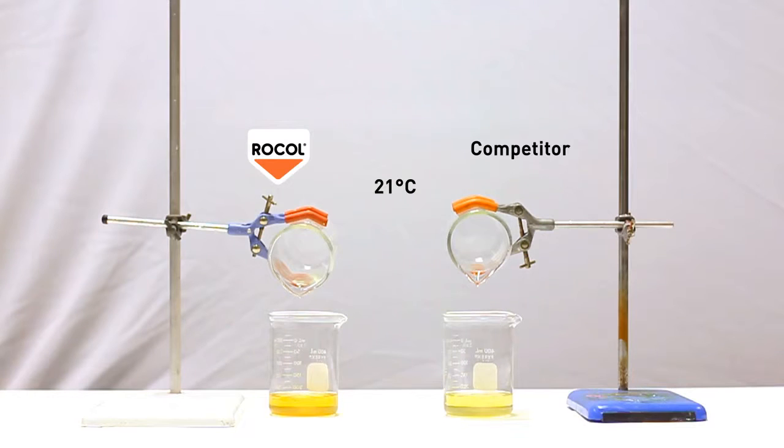To illustrate how important pour point is, let's consider two oils with similar viscosity at room temperature. One is a standard mineral oil lubricant, the other is ROCOL refrigeration compressor oil. As you can see, at room temperature both flow freely.